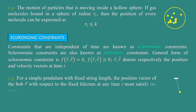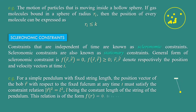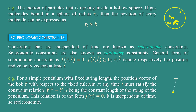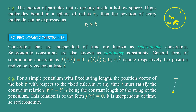For example, for a simple pendulum with a fixed string length, the position vector of the bob r⃗ with respect to the fixed fulcrum at any time t must satisfy the constraint relation |r⃗|² = l², where l is the constant length of the string of the pendulum. This relation is of the form f(r⃗) = 0, and it is independent of time, so it is scleronomic.